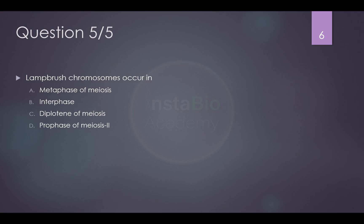Lampbrush chromosomes occur in. So this is a fact-based question. Lampbrush chromosomes occur in diplotene of meiosis. It occurs in most of the vertebrates except mammals. And that is one more thing. This is also called as diplotene chromosome.